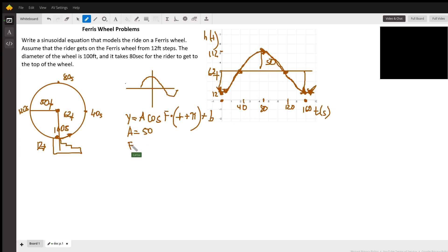What is the frequency for sine or cosine function? It would be 2π divided by period, and period is 160 seconds, which would be π divided by 80.